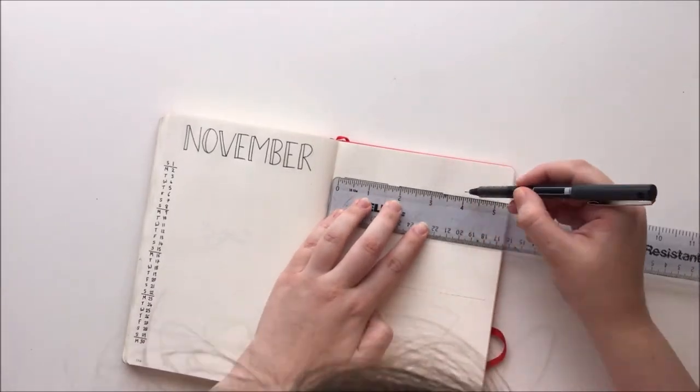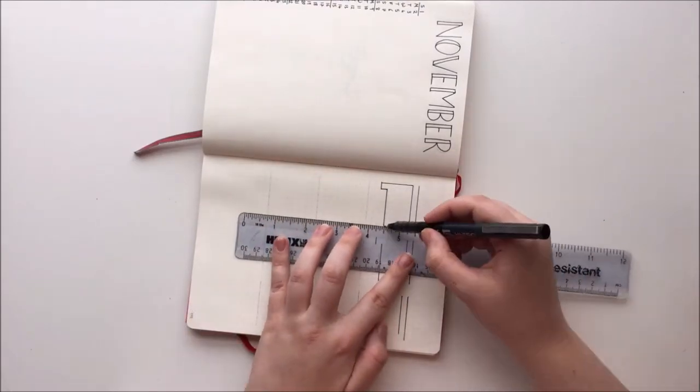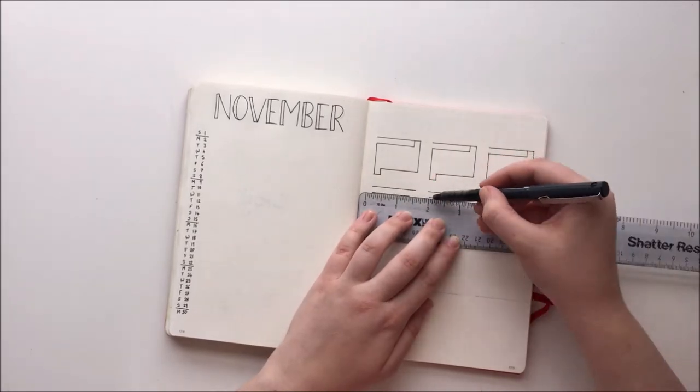Then on the opposite page, I put my habit trackers. For these, I draw kind of an outline of the calendar month, and so when I complete that habit on a specific day, I can fill in that specific date.